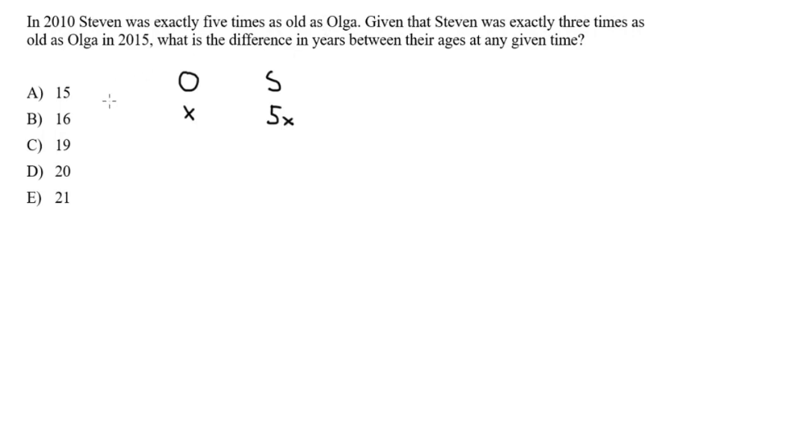And remember, this was the age ratio in 2010. And I'll just write time zero here, or zero to designate time zero. And then five years later, what happened? Well, five years later, how old is Olga going to be? Well, she's just going to be her age at time zero plus five. So, X plus five. And what was the age ratio then? Well, in 2015, we know that Stephen is exactly three times the age of Olga. That is, he's going to be 3X plus five.